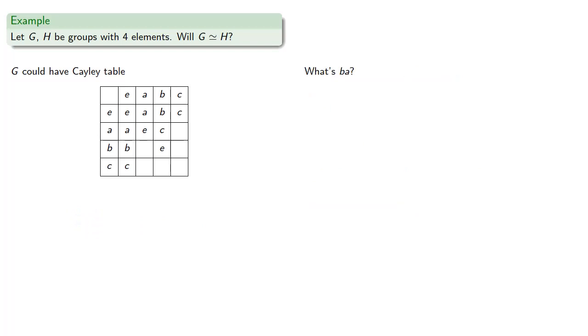Now while we've figured out what AB is, what's BA? Well BA can't be E since A and B are their own inverses. BA can't be B since A would be the identity, and similarly BA can't be A, and so that means BA must be C, the fourth element.